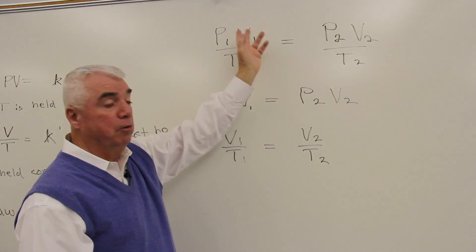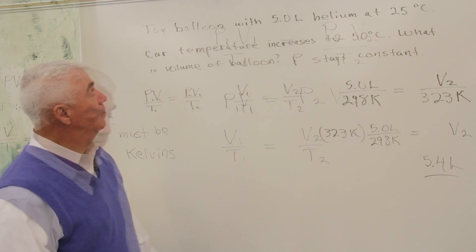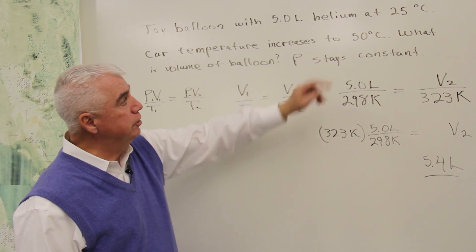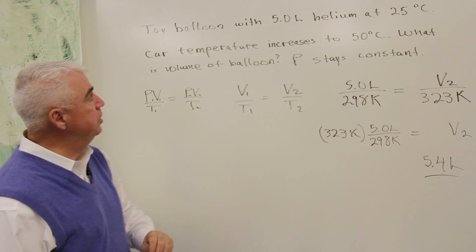Let's work a problem using the gas laws. A toy balloon has a volume of 5.0 liters at 25 degrees centigrade.